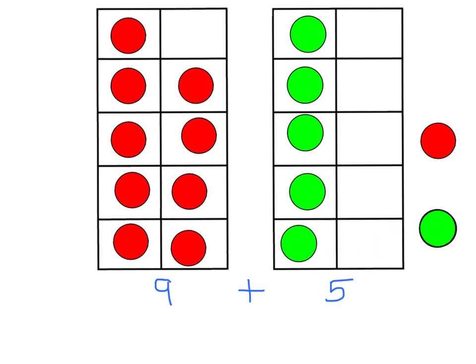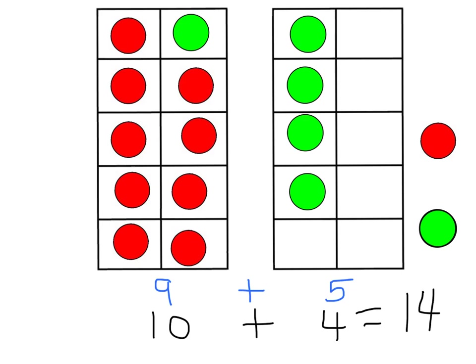We're now going to use our Make 10 strategy to find the total. In this strategy, we ask students to make a friendly 10 by taking from one number to give to the other. I see here that the 9 is really close to 10. By looking at my 10 frame, I notice that 9 only needs one more in order to make 10. So I'm going to take one from the 5 and move it over to the 9. This allows me to make a friendly 10, which is an easier reference point for students to add. Now my number sentence shows 10 plus 4. And 10 plus 4 equals 14.